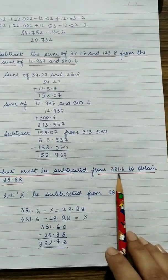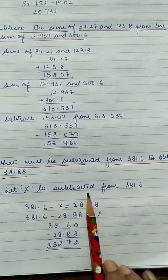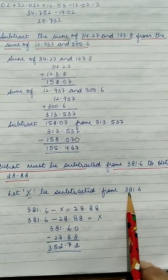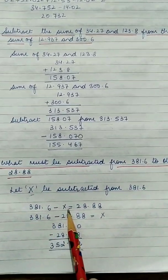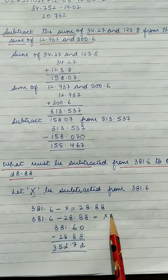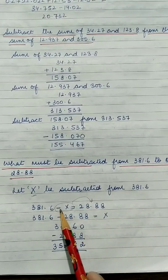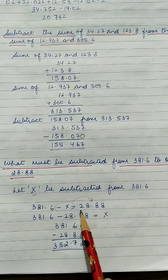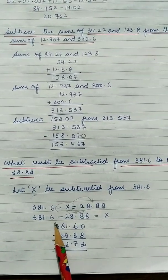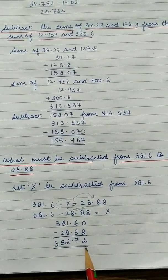Question number 5: What must be subtracted from 381.6 to obtain 28.88? Let x be subtracted, so we write: 381.6 minus x equals 28.88. We shift the minus x to the other side, converting it to plus, and shift 28.88 to give minus. So 381.6 minus 28.88 — when you subtract, you will get 352.72.